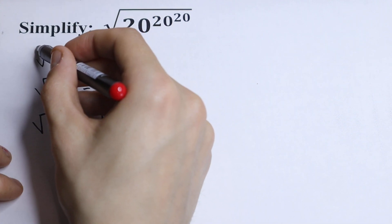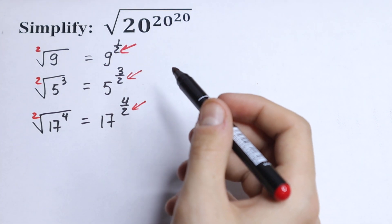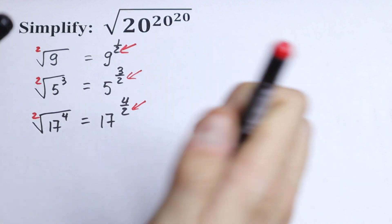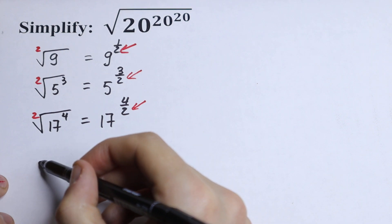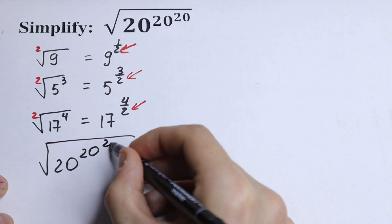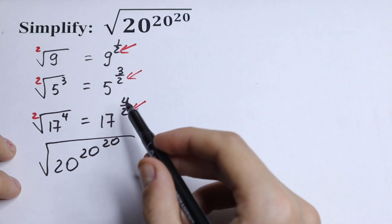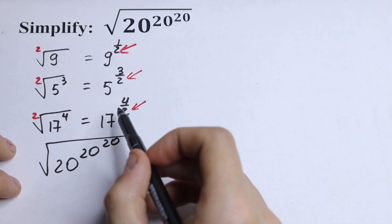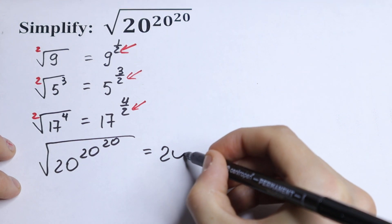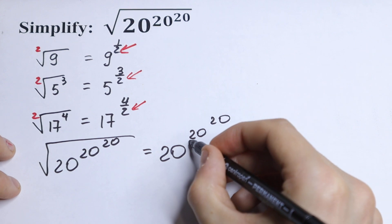Right here we have 2 because this is the common square root sign — it has an implicit 2. So applying the same logic: the square root of 20 to the power 20 to the power 20, our square root sign divides our power by 2, so we will have 20 to the power 20 to the power 20 divided by 2.